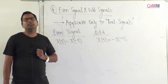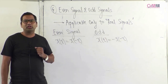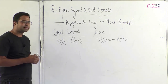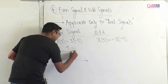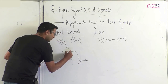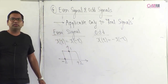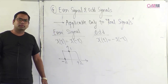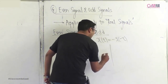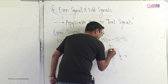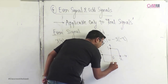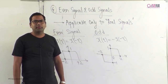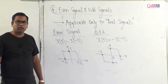x(−t) is the time-reversed version of the signal. An example of an even signal is a rectangular pulse from −2 to +2 with amplitude 1 — even signals are always symmetrical about the y-axis. An example of an odd signal is one with amplitude +1 from 0 to 2 and amplitude −1 from 0 to −2 — odd signals are symmetrical about the origin.